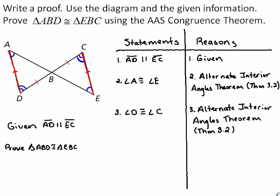Angle D is congruent to angle C by the alternate interior angles theorem because, looking at the diagram, angle D and angle C are alternate interior angles — they lie on opposite sides of the transversal and inside the parallel lines.